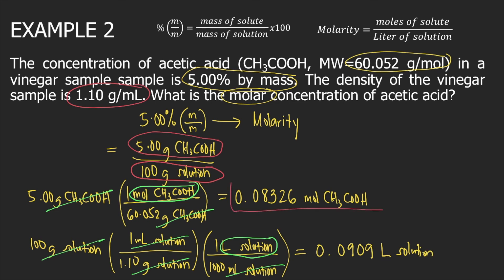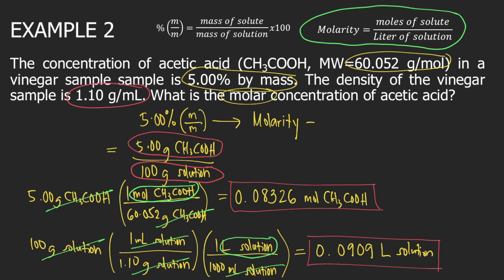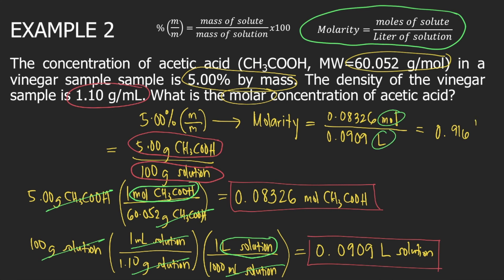Now that we have moles of acetic acid and liters of solution, we can compute molarity. Using the formula, molarity = moles of solute ÷ liters of solution = 0.08326 moles ÷ 0.0909 liters, which is approximately equal to 0.916 moles per liter, or 0.916 molar. This is the answer to the question.